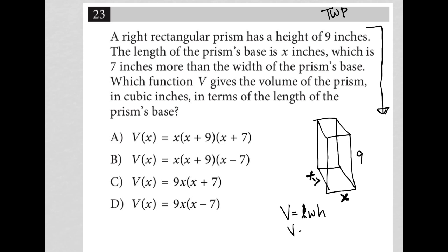So what do we have? Our length is x, our width is x minus seven, and our height is nine, right? So I could write this as nine x parentheses x minus seven for my volume. And do I see anything that matches that? Yes, I do. It is choice D. So choice D is the correct answer.